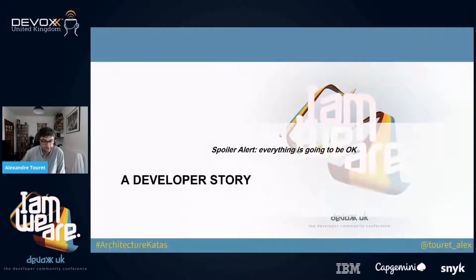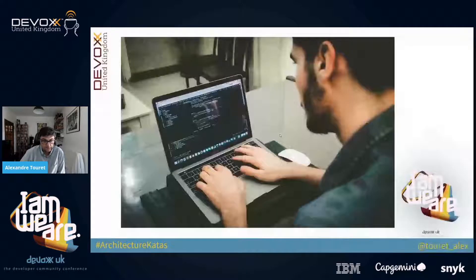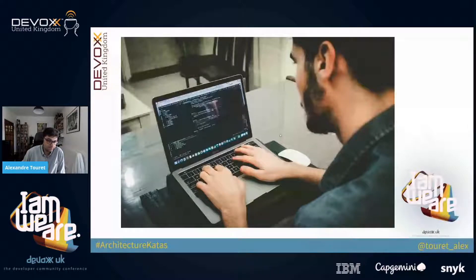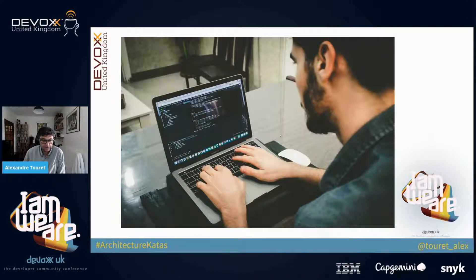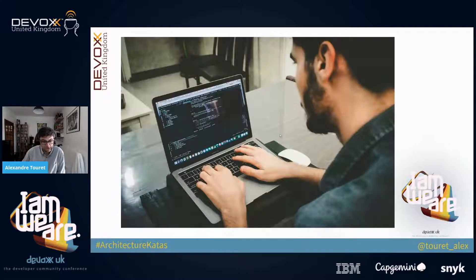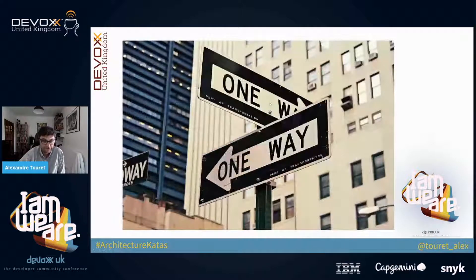Before talking about the architecture katas, I will tell you a developer story. Once upon a time in an IT company, there was a developer named George. George was really good at coding, designing, and so on — very efficient. And beyond his skills, he really enjoyed dealing with technical matters.